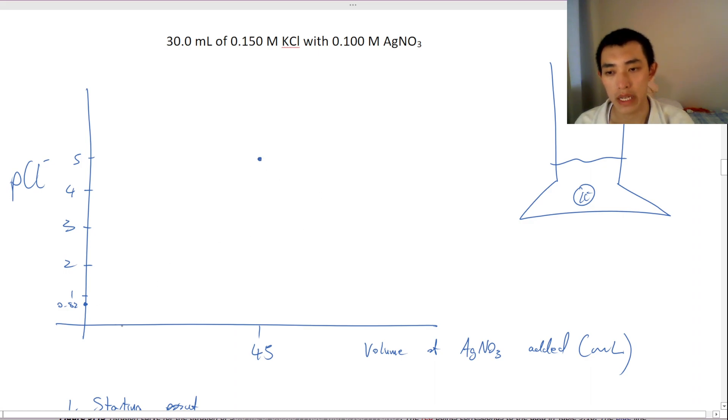Now, of course, you could do this for like 10 milliliters and 20 milliliters and 30 milliliters and like 40 milliliters. If you actually did this, you'd see that it has a kind of like a normal titration graph shape. Where it kind of starts off slow and then slopes up, spikes. You can do that in your own time.